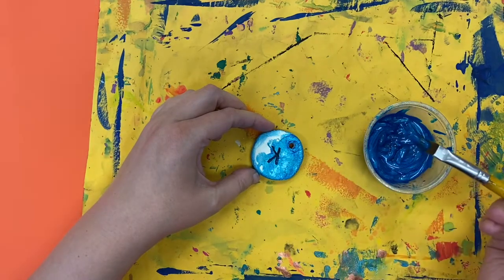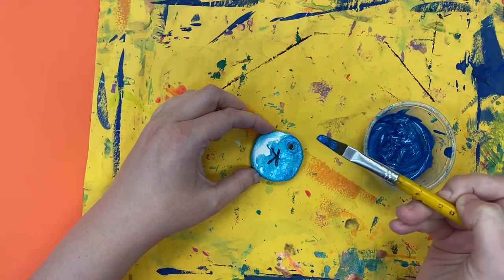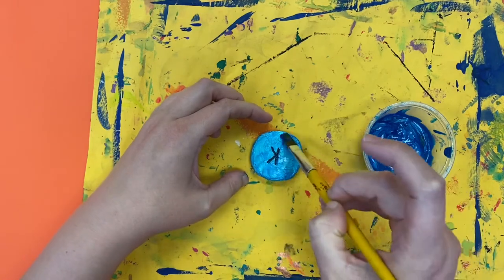So just dip your brush, get a little bit of paint on your brush, and then paint a really thin layer.